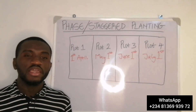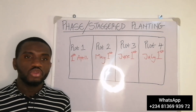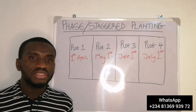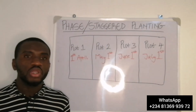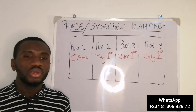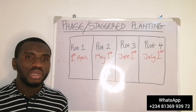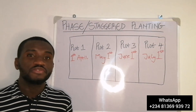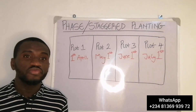In case you are a food crop farmer, an annual crop farmer — you plant crops like maize, cassava, yam, sweet potato, cowpea, soya bean, pineapple, tomato, pepper — this video is for you and you have to watch it to the end.